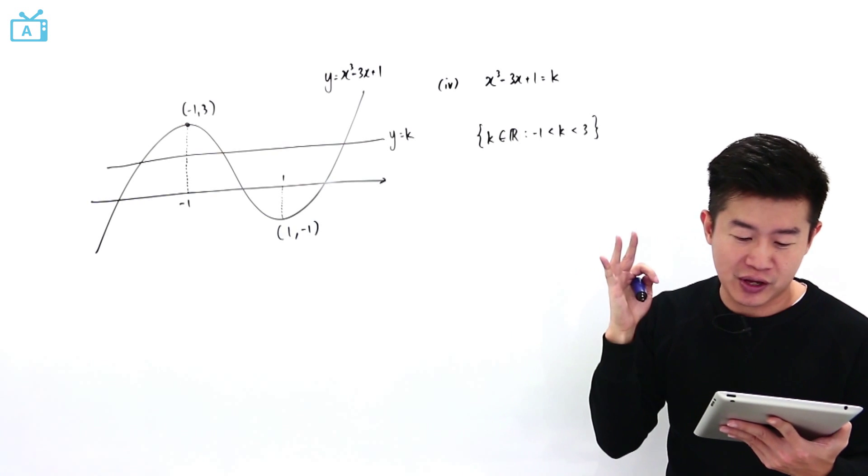But just one more thing to take note of is k cannot be equal to minus one, neither can k be equal to three, because if k is equal to minus one, that means it is going to have just two distinct roots. And if k is equal to three, then it will have just two distinct roots. But what this question wants is to have three real distinct roots. That's why k must be strictly between minus one and three.